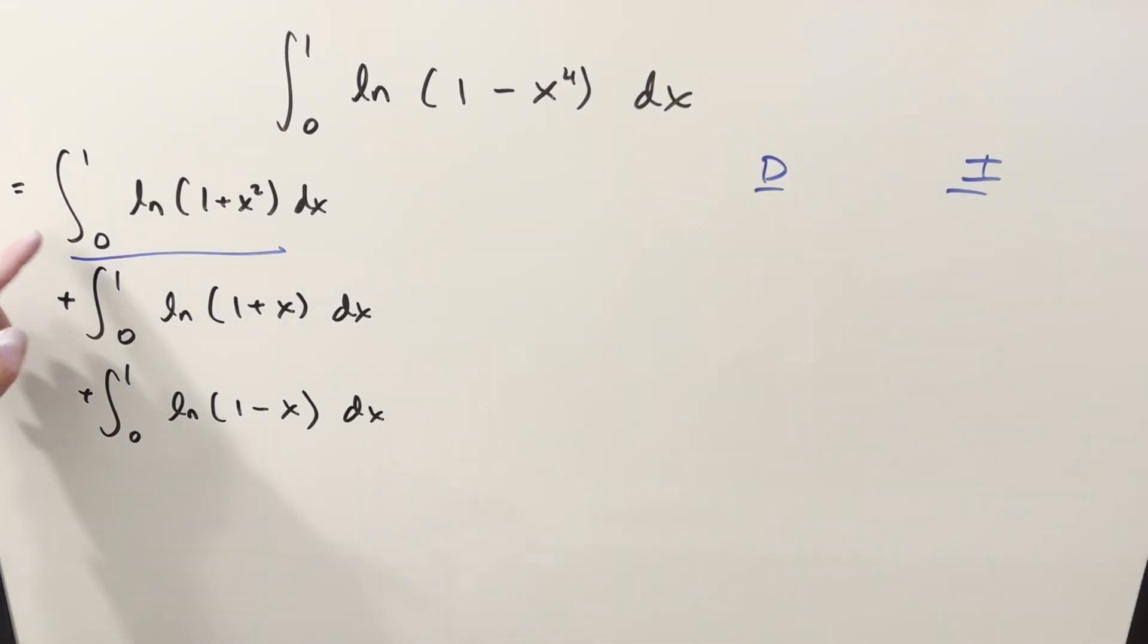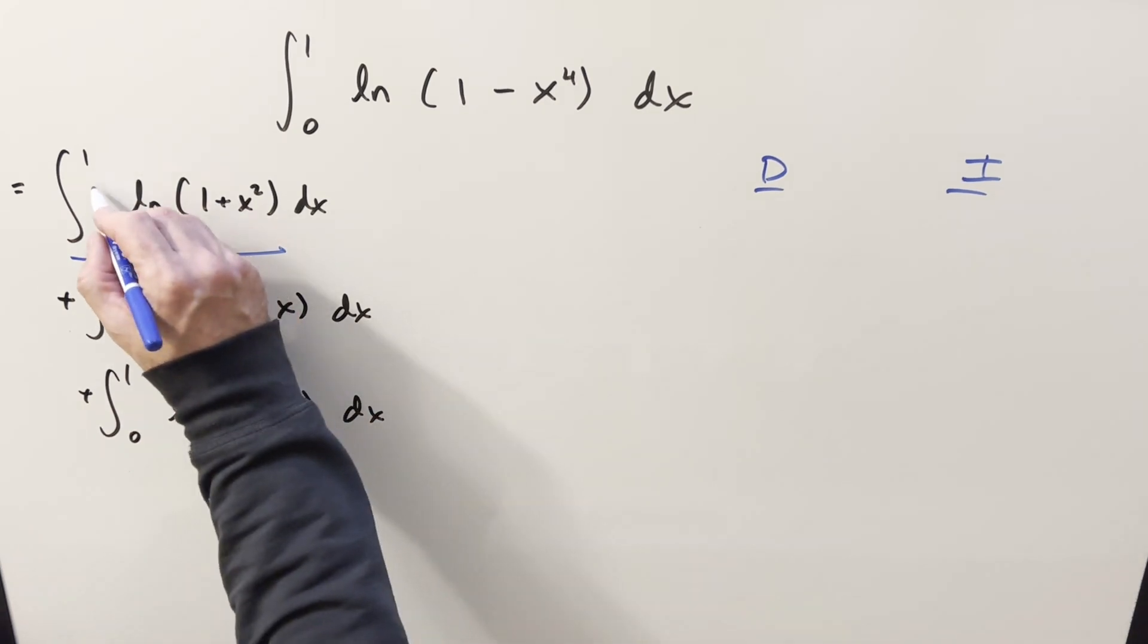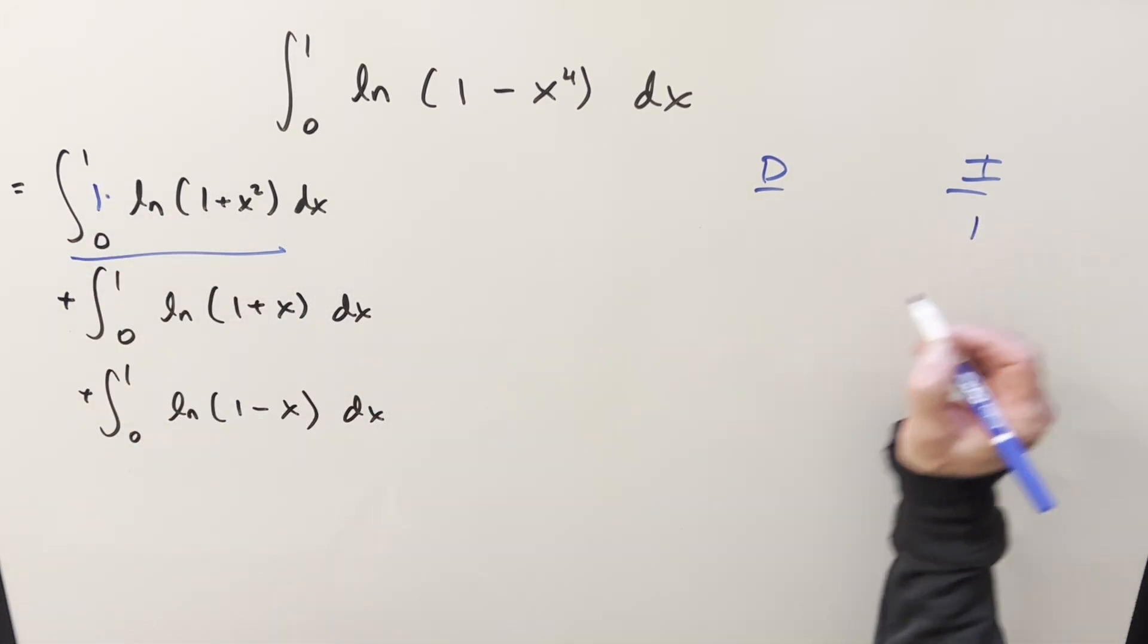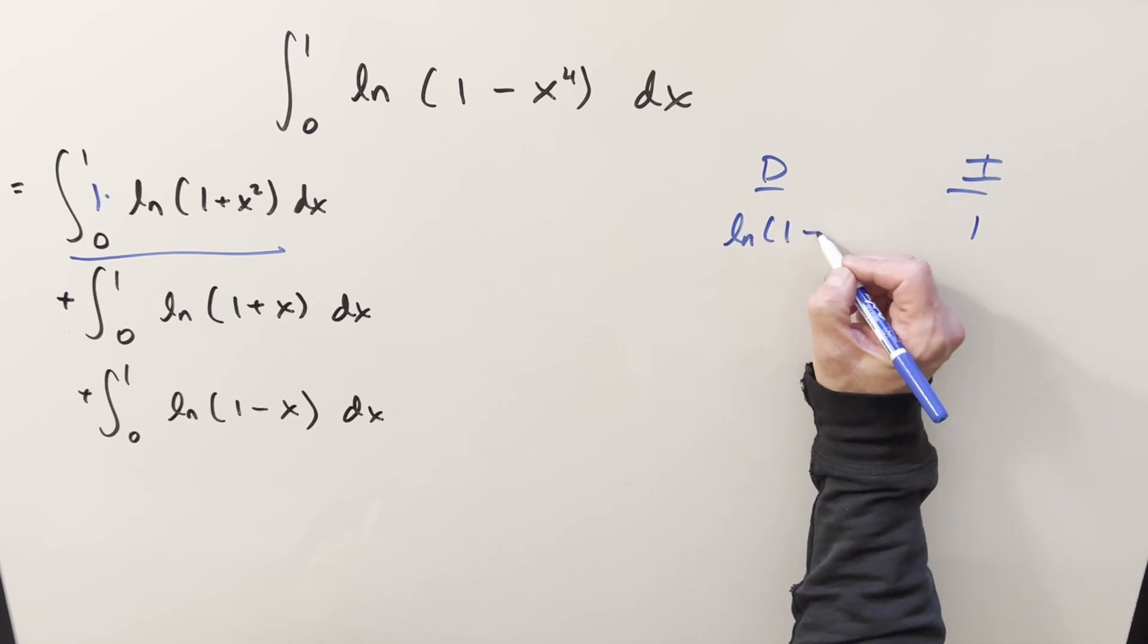We'll do integration by parts using the DI method. I can just kind of create a one right there to integrate and differentiate the natural log part.